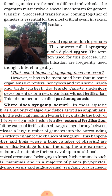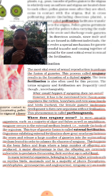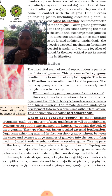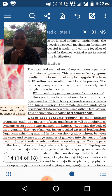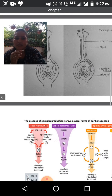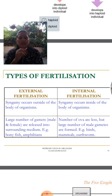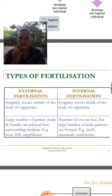Where does syngamy occur? Syngamy can occur inside the body or outside the body. If it takes place inside the body, it is called internal fertilization. If it takes place outside the body, it is called external fertilization. In case of external fertilization, the syngamy occurs outside the body of the organism.